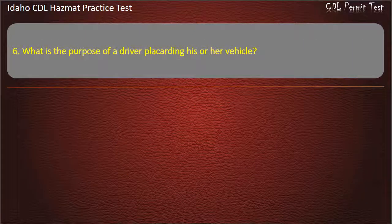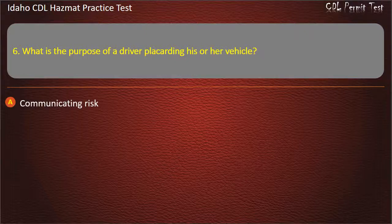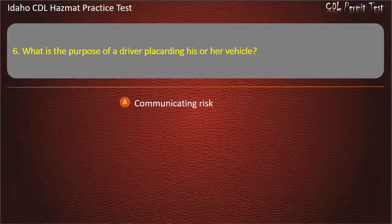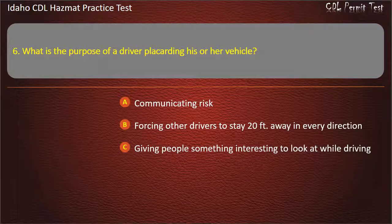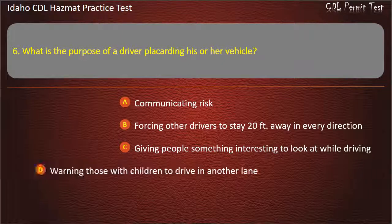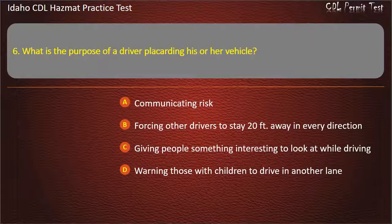Question 6. What is the purpose of a driver placarding his or her vehicle? Communicating risk. Forcing other drivers to stay 20 feet away in every direction. Giving people something interesting to look at while driving. Warning those with children to drive in another lane. Answer: Communicating risk.